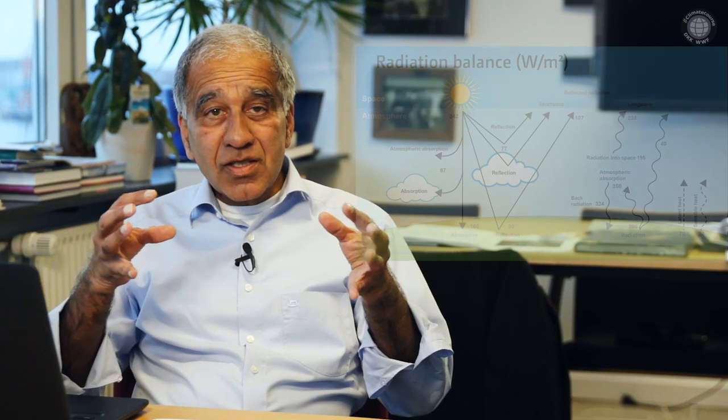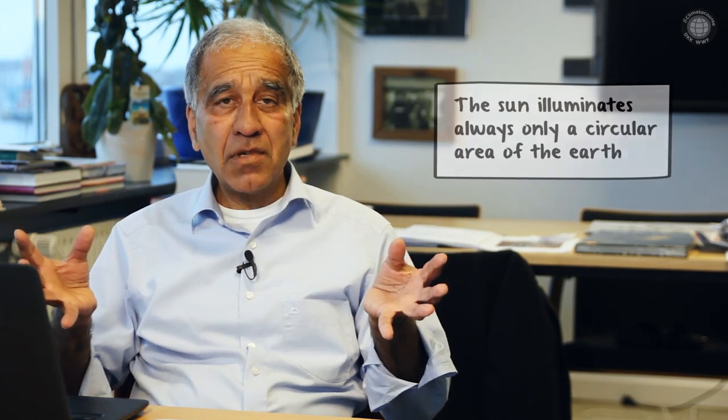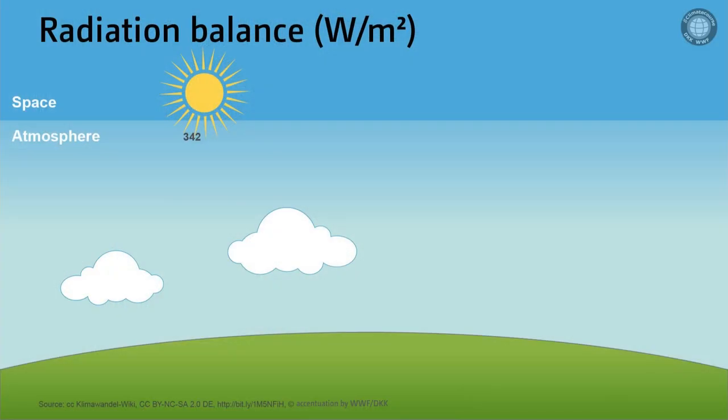Now the Earth is not fully illuminated by the Sun, rather only a circular area is. Hence only one-quarter of the solar constant reaches us, which amounts to 342 watts per meter squared. And here we can now see what happens to solar radiation on its way towards the Earth's surface.